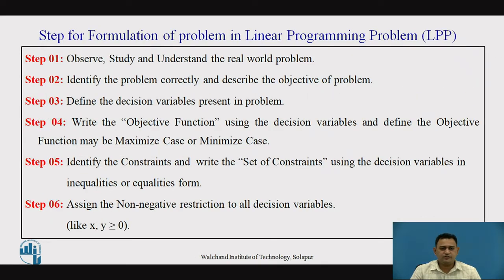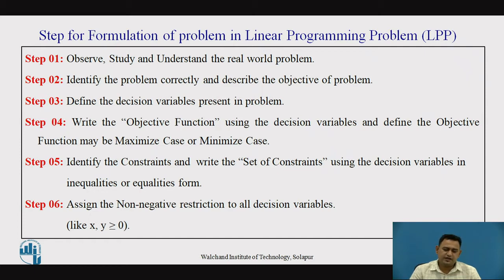Now, the steps involved in the formulation of the problem in the linear programming problem are as follows. Step one: we have to observe, study, and understand the real world problem. We have to identify the correct problem of the case and describe the objective function equation. After this, we have to go for defining the decision variables involved in the problem. The decision variables always help us to define the values in quantitative form. Then we have to define the objective function equation by using the decision variables.